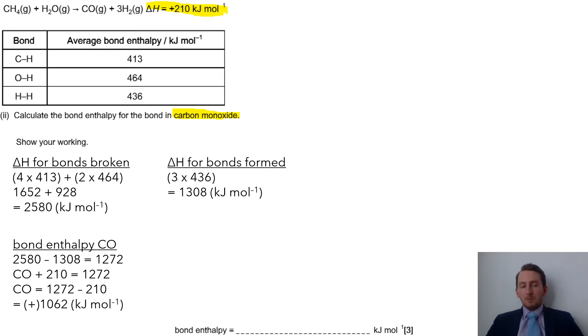Now, if you want to do a check and actually make sure that's the correct value, then go and then add it on to your bonds formed, and then do the reactant minus product, and you'll find you get 210. So if you want to do that as a final check, that's probably a good thing to do.